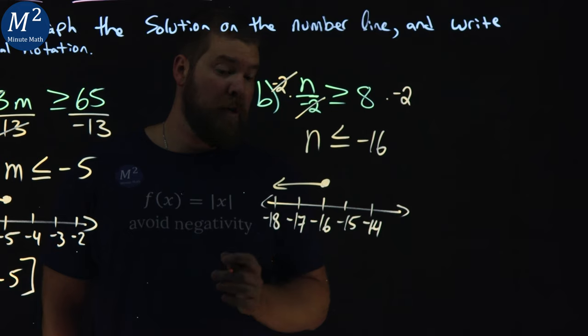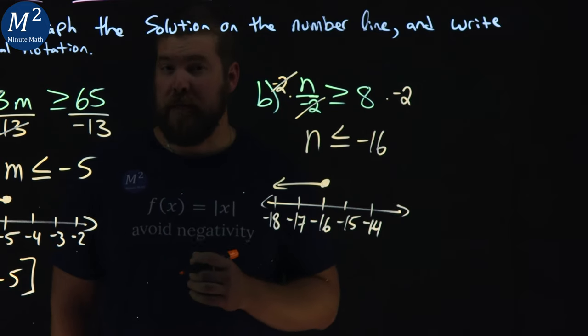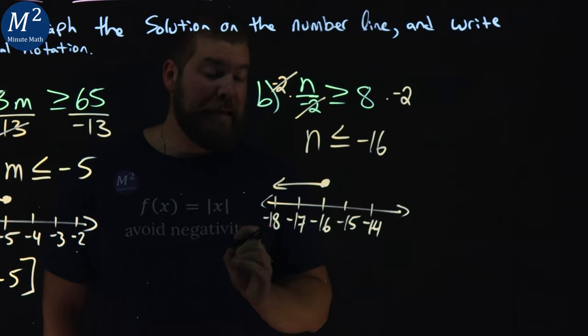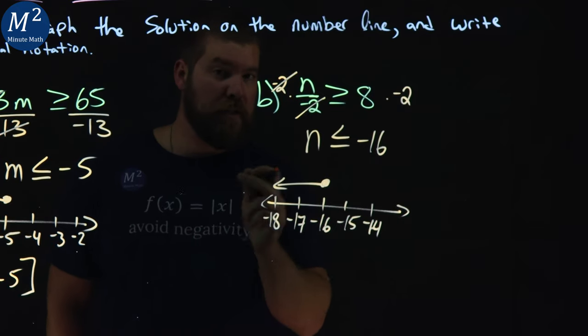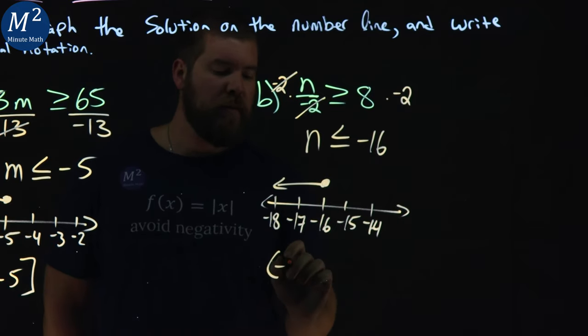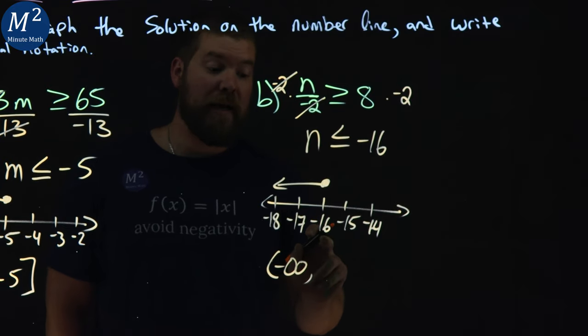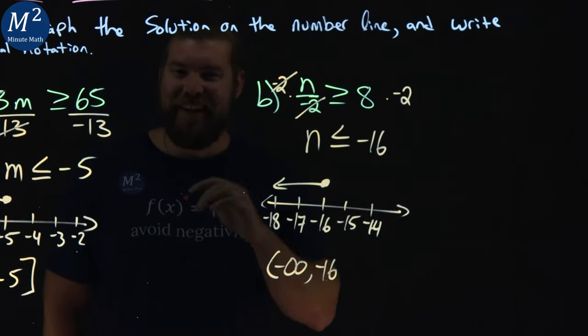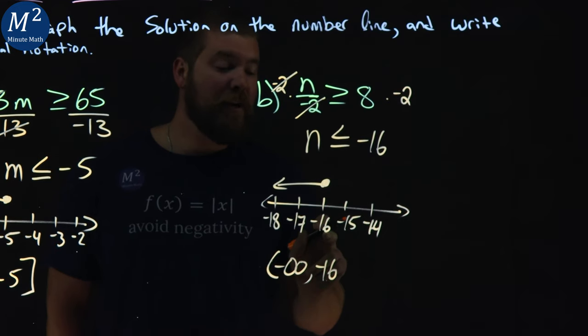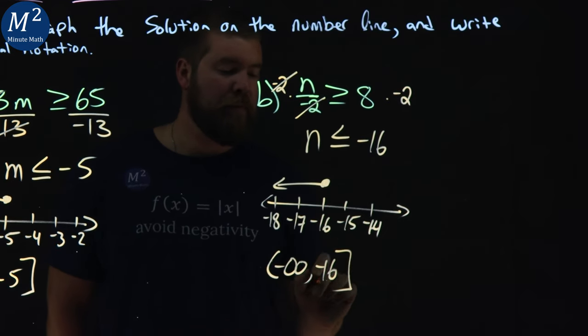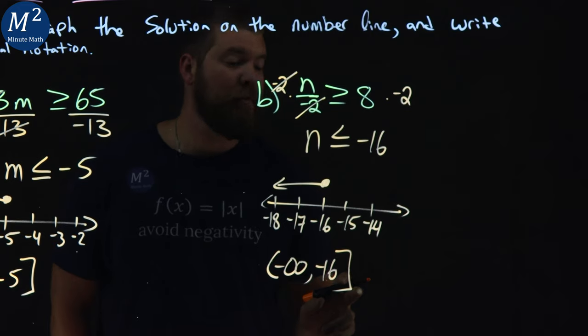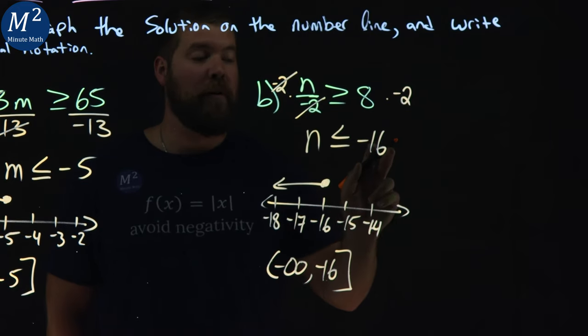Let's write it in interval notation. The lowest value that n can be is negative infinity, all the way to the left there. Again, parenthesis for negative infinity, comma to the highest value, which is negative 16. And again, we can equal negative 16, so we put a bracket. We have our interval notation that matches up with our graph and solution.